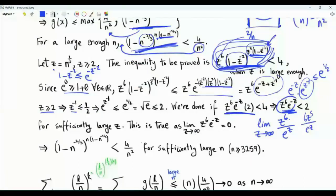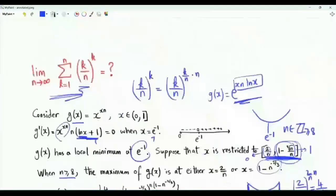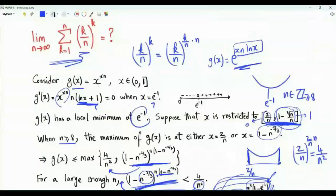We can verify this numerically: Mathematica shows that if n exceeds 3259, then the inequality is always true. For our purposes it is enough to know that there exists some large N such that for n ≥ N, the maximum of g(x) on this interval is 4/n², achieved at x = 2/n.